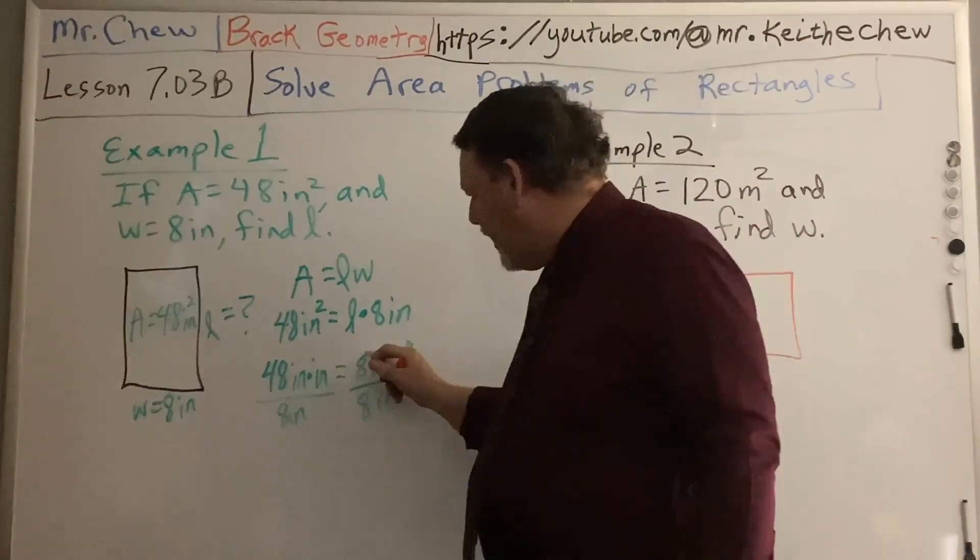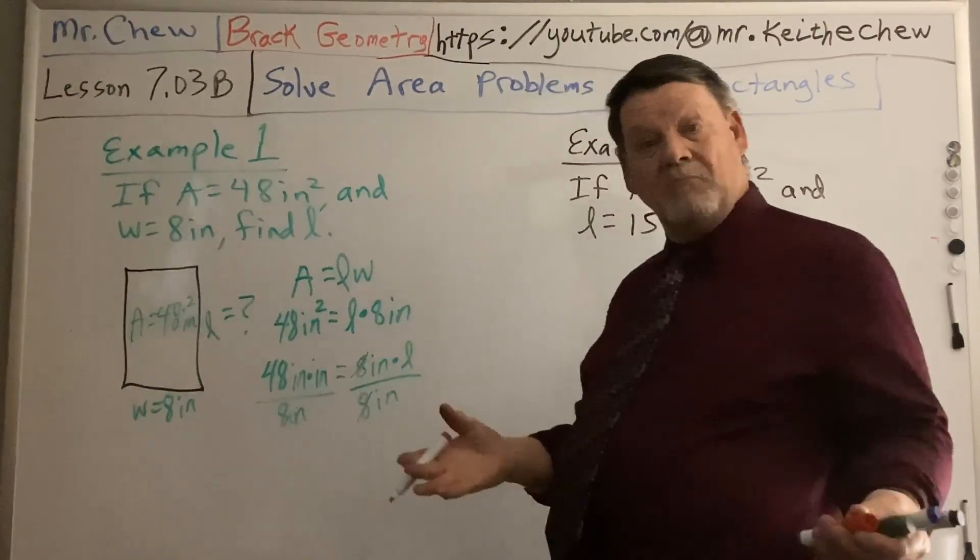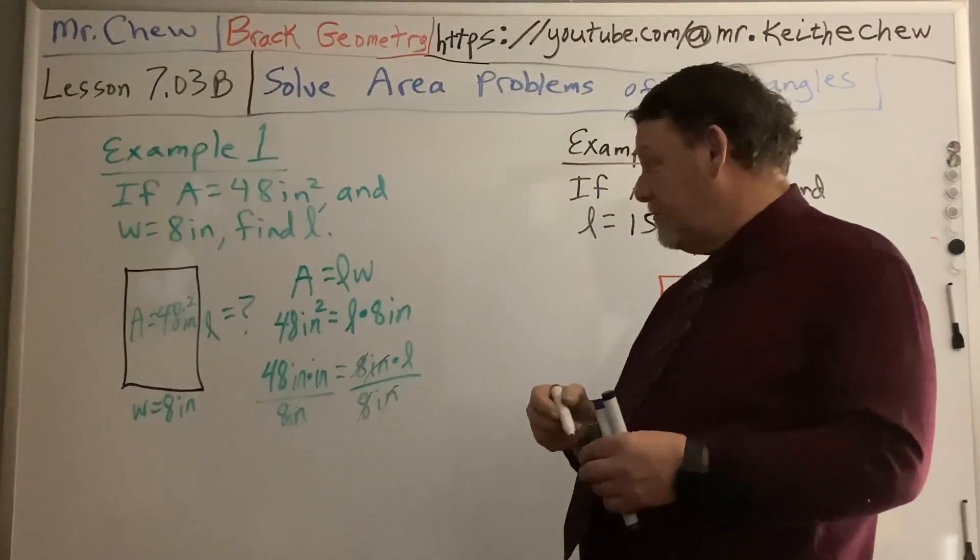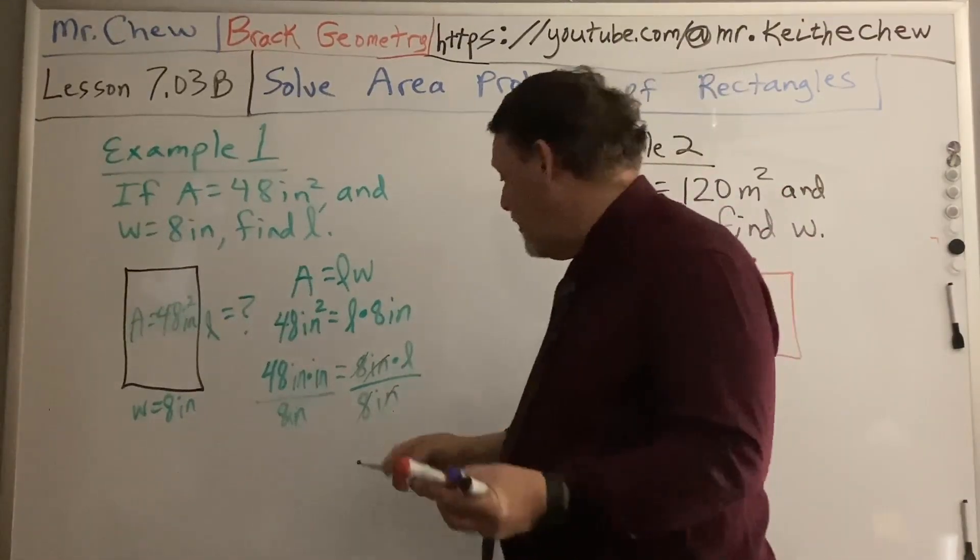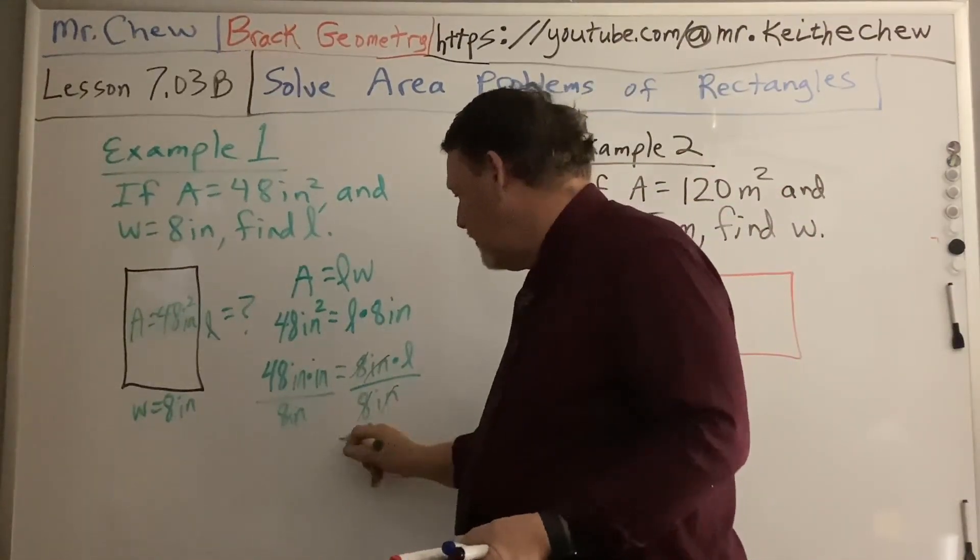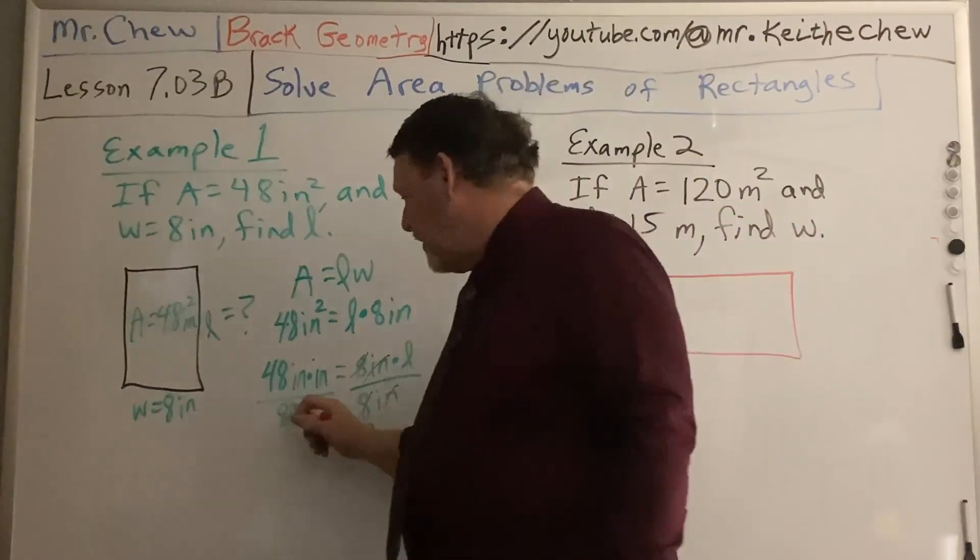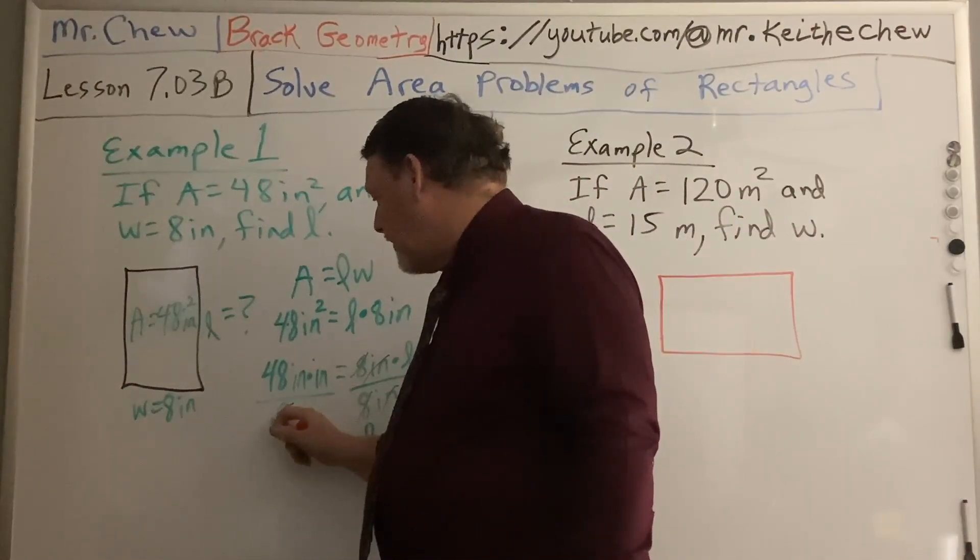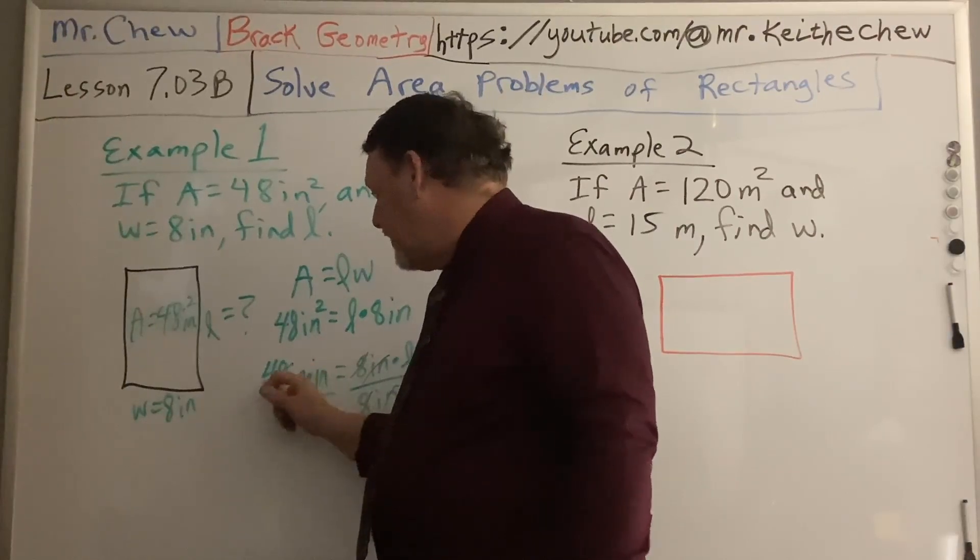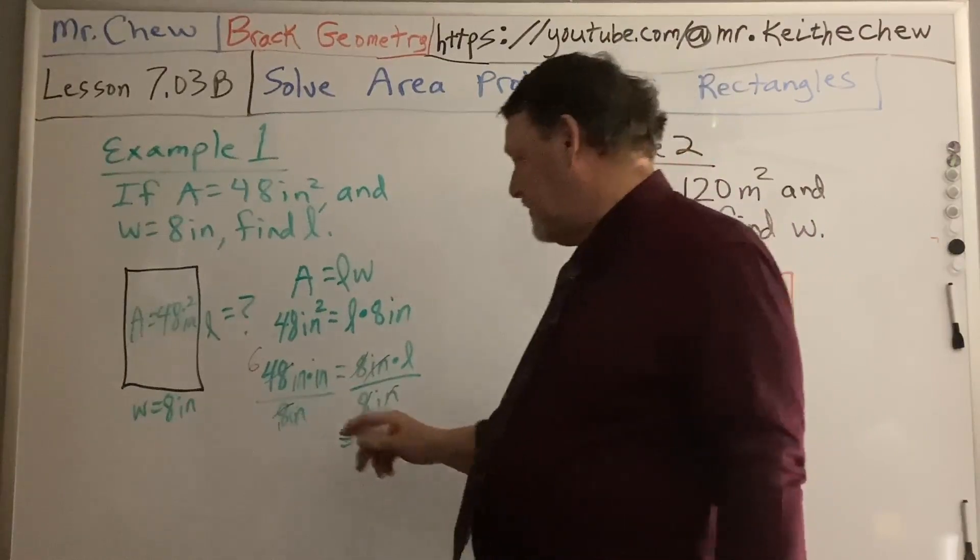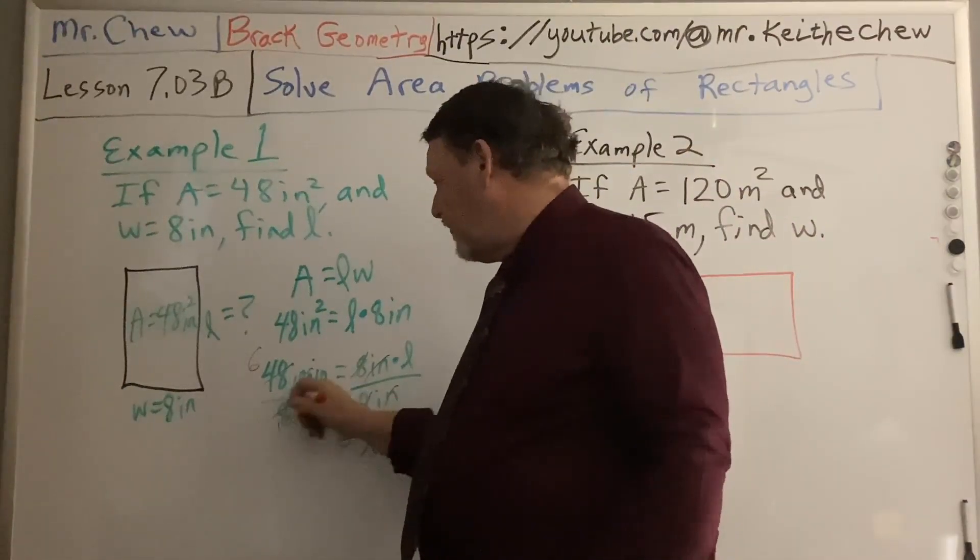So I'm going to divide the right by 8 inches and the left by 8 inches. So 8 over 8 is 1. 1 over 1. Inches over inches is 1 over 1. So I've got L on my right. Then 8 is a common factor of 8 one time. And you can divide 48 by 8 and get 6.